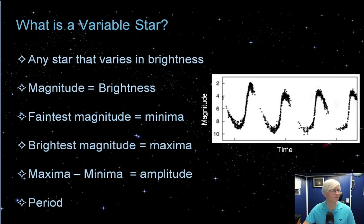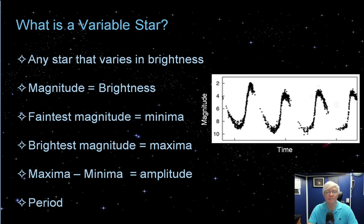Let me cover a few basics. What is a variable star? It's a star that changes or varies in brightness. Astronomers use the term magnitude to describe the brightness of any celestial object that emits in optical wavelengths. The star is at minima when faintest and at maxima when brightest. The difference between maxima and minima is termed amplitude. The graph shown here is a light curve of a variable star changing its magnitude over time.